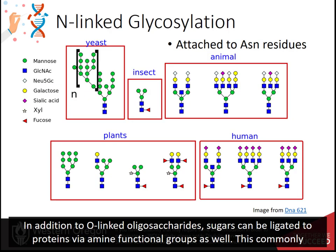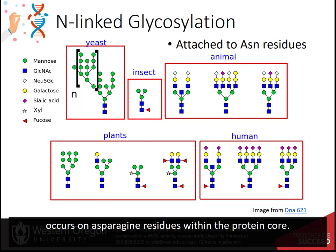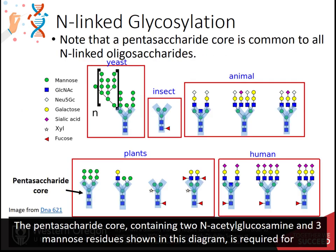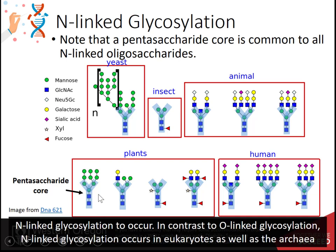In addition to O-linked oligosaccharides, sugars can be ligated to proteins via amine functional groups as well. This commonly occurs on asparagine residues within the protein core. The pentasaccharide core containing two N-acetylglucosamine and three mannose residues, shown in this diagram, is required for N-linked glycosylation to occur.